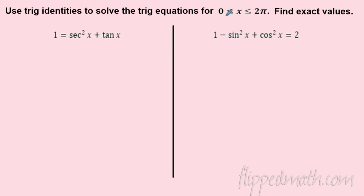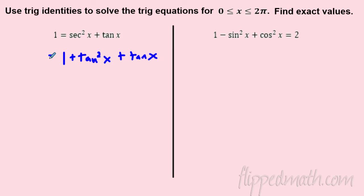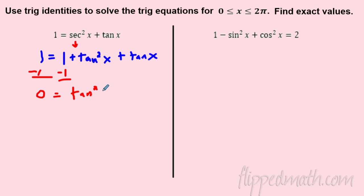Now let's bring identities into solving equations. Here we see secant squared — remember, secant² = 1 + tangent². Rewrite secant² as 1 + tangent², so we have 1 + tangent² + tangent = 1. Subtract one from both sides to get: 0 = tangent² + tangent.